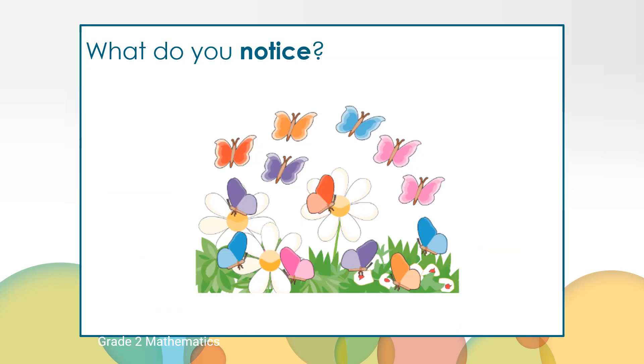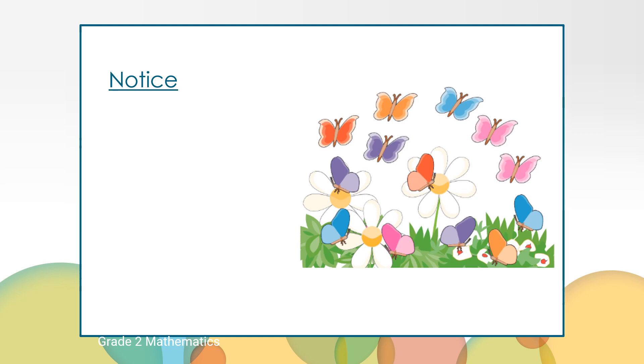We'll begin our lesson today by doing a notice and wonder. Take a moment to look at this picture and think about all the things you notice. If you have a pencil and paper ready, you can even write them down so you don't forget. We'll pause here. I'm thinking about what you might have noticed in this picture. Maybe it was the many bright colors, or all the different butterflies. Maybe you noticed some of those butterflies seemed to be flying and some were resting. Maybe you saw the flowers or the tall grass. Maybe you had a different idea. Go ahead and share it now.